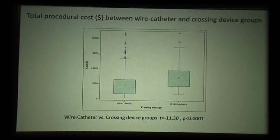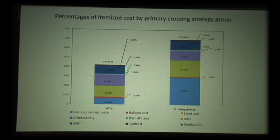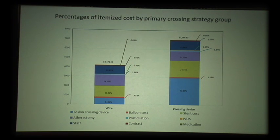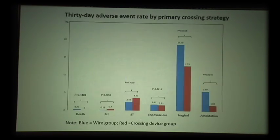Dr. Hakong Slaughter has contributed in making these data available. It's a cost analysis of CTO crossing and wire catheter approaches. Costs currently range between $5,000 and $8,000, and are much higher with the crossing device. The way we cross the CTO ultimately impacts what kind of future devices, stents, or atherectomies we end up using, and that also contributes to the cost.